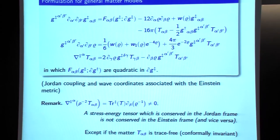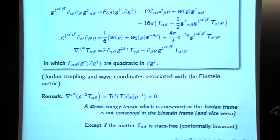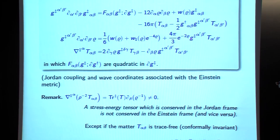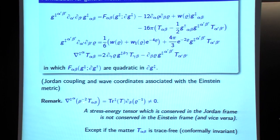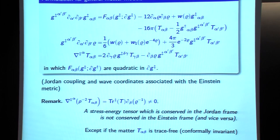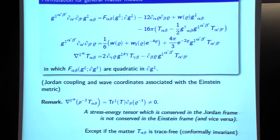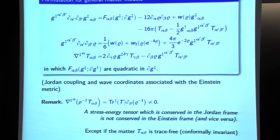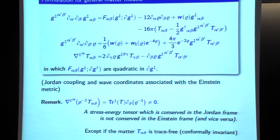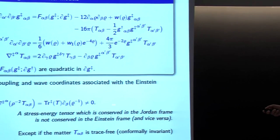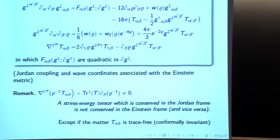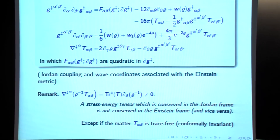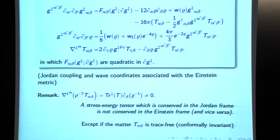A stress-energy tensor conserved in the Jordan frame is not conserved in the Einstein frame, and vice versa. If you want to change the point of view, you could impose conservation in the Einstein frame, but then it would not be conserved in the Jordan frame. At this level this is a choice of a physicist. It would only be for special matter models that this would be vanishing.